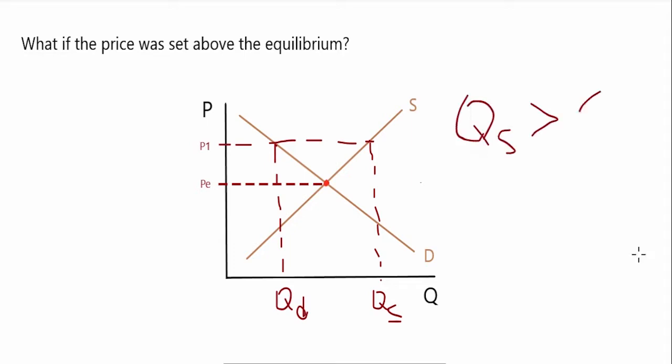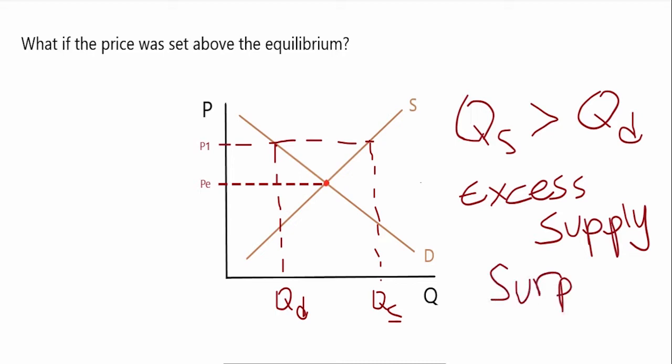So we can write that out over here. Quantity supplied is greater than your quantity demanded. What does that mean? That means that you have excess supply. What does excess supply mean? It means that you are in a surplus. So that's your keyword right there, a surplus. So that is what happens if the price is set above the equilibrium.